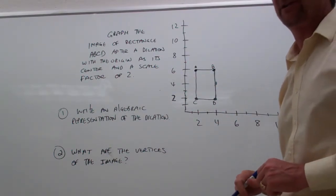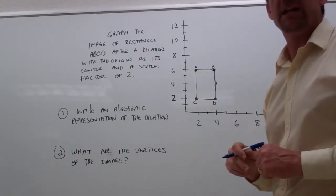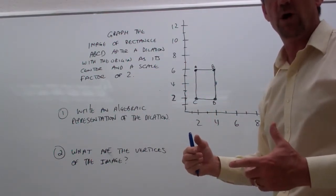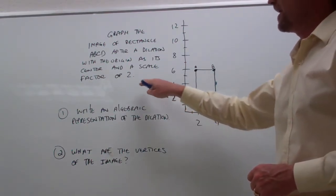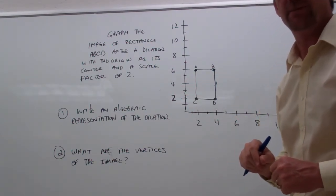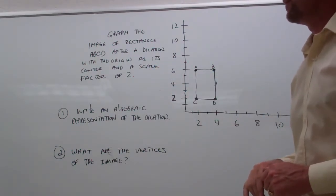Anytime we have a scale factor greater than 1, the type of dilation we're doing would be an enlargement. We're going to make something bigger because our scale factor is greater than 1. If we have a scale factor less than 1, then we're talking about making a reduction, making something smaller. But this asks us to use a scale factor of 2.